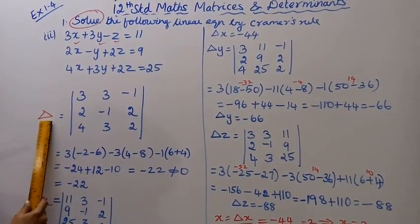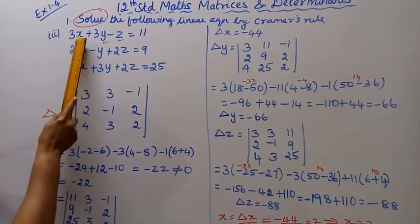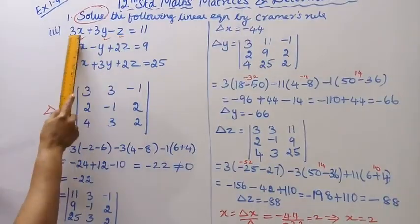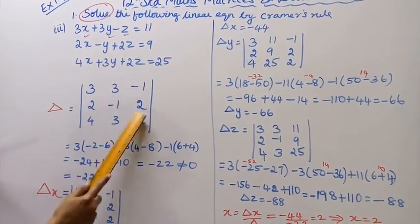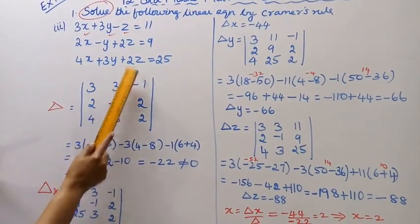Delta is equal to the determinant. The determinant, the coefficients of x, y, z: 3, 3, minus 1; 2, minus 1, 2; 4, 3, 2.